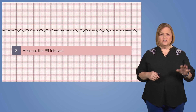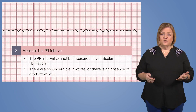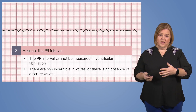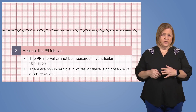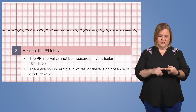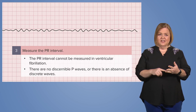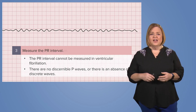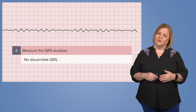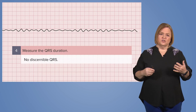Now measuring the PR interval — if we don't have a P wave, we can't measure a PR interval, so that's out. So far, could we do step one? No. Step two? No. Step three? We're 0 for 3 right now. Let's look at step 4. We've got another winner — you can't measure the QRS.